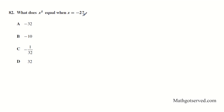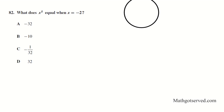Let's take a look at question 82. It says: what does x to the fifth equal when x equals negative two? Remember your sign rules for multiplication. Anytime you're multiplying different signs, you end up with a negative. If you're multiplying the same signs, you end up with a positive. There's an easy way to remember this — it's called using the peace sign. Let's go over that mnemonic device.